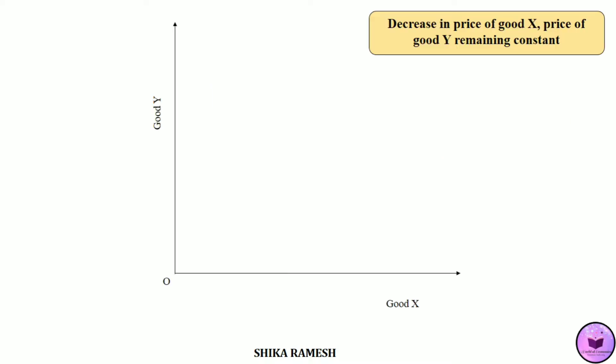First of all, we shall see the case wherein the price of good Y remaining the same when the price of good X decreases. Initially we have the consumer's budget line given as RS, and in this budget constraint the consumer reaches equilibrium at point A with U1 level of utility.